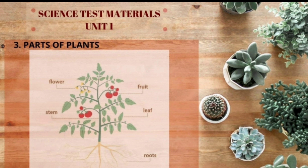The third material is about parts of plants. Those parts are flower, fruit, leaf, stem, and roots. But don't forget, there is one more part of plants. What is that? Exactly! It is seeds.